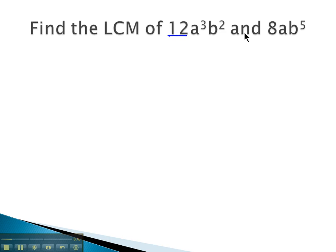First, let's look at the numbers, 12 and 8. We can probably use mental math to find the least common multiple of these. 12 isn't divisible by 8, but 24 is. 24 is the least common multiple of the numbers.